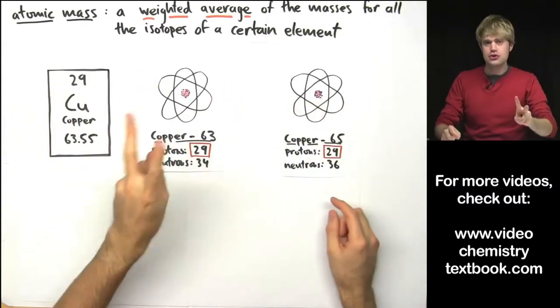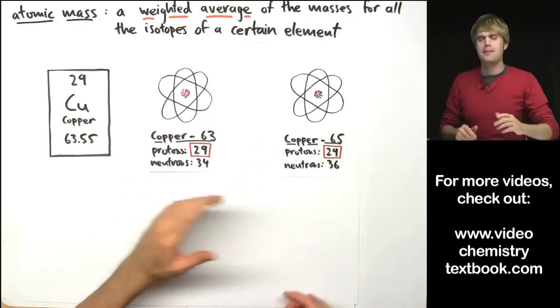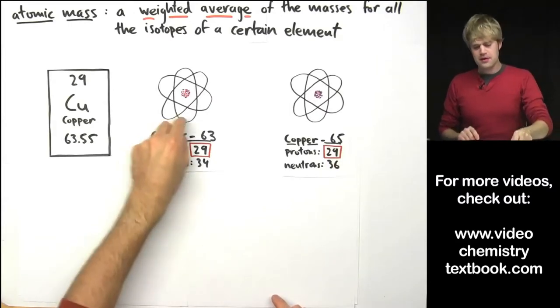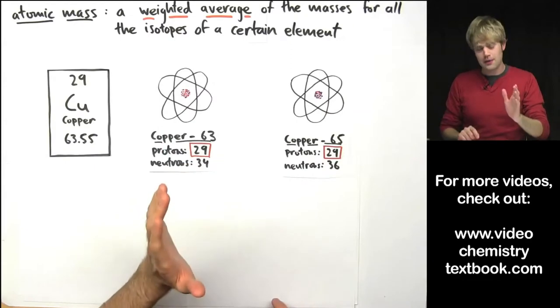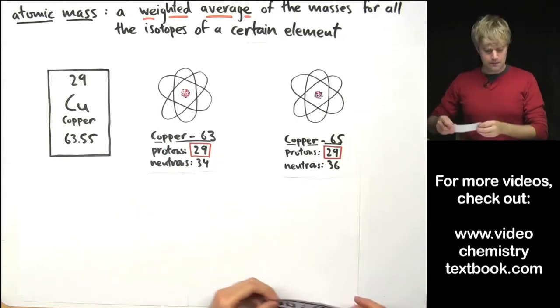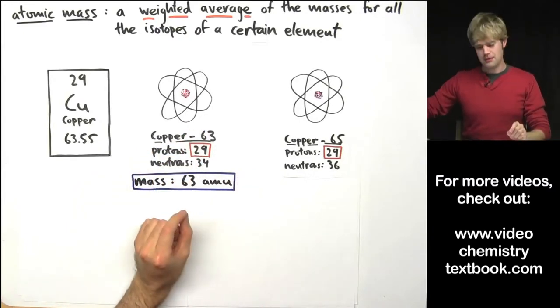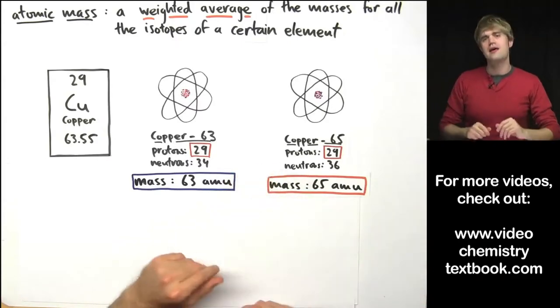Copper as we said earlier has two versions or two models, copper-63 and copper-65. Just like the Lamona, these two versions of copper, these two isotopes of copper, have different masses. So, the mass of copper-63 is about 63 AMU and the mass of copper-65 is about 65 AMU.